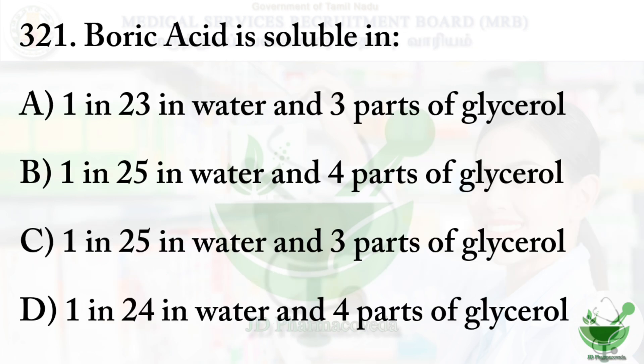Question number 321: Boric acid is soluble in? Option A: 1 in 23 in water and 3 parts of glycerol, Option B: 1 in 25 in water and 4 parts of glycerol, Option C: 1 in 25 in water and 3 parts of glycerol, Option D: 1 in 24 in water and 4 parts of glycerol. The correct answer is Option B, 1 in 25 in water and 4 parts of glycerol.